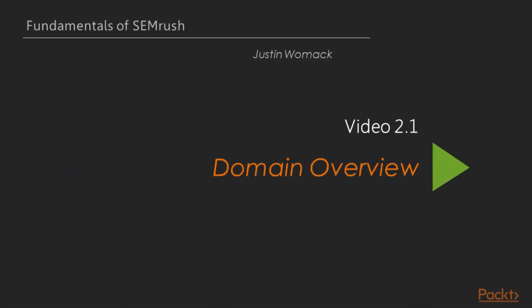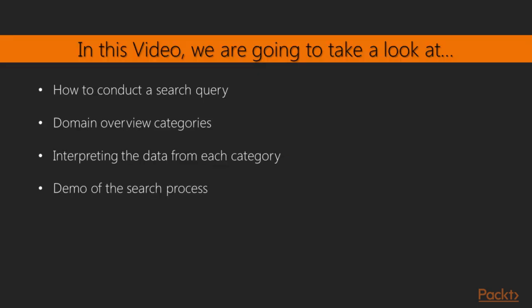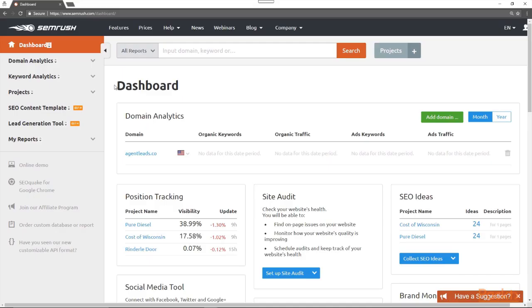In video 2.1, we're going to look at the domain overview. In this video, we're going to take a look at how to conduct a search query. We'll look at the domain overview categories with an explanation of each. I'm going to show you how to interpret the data from each of those categories, and we're going to demo the search process using SEMrush. Let's take a look.